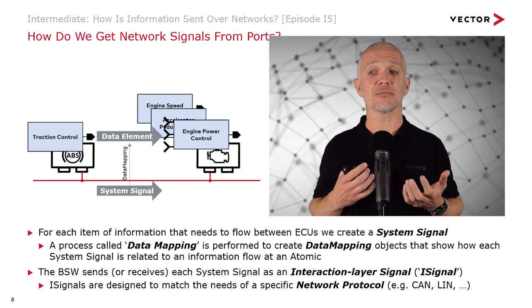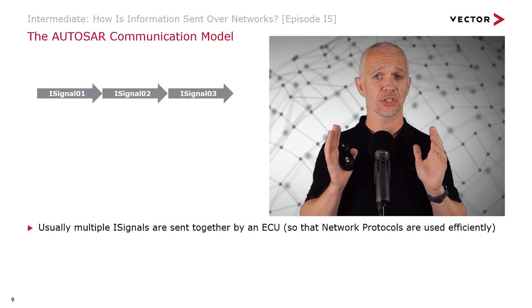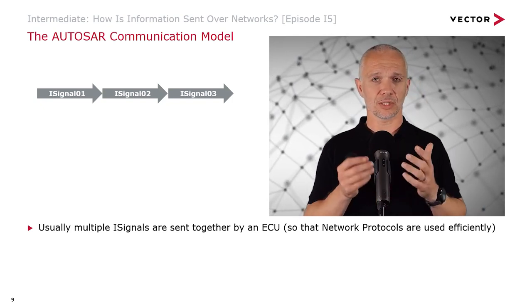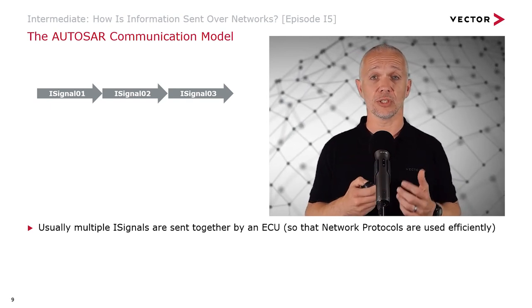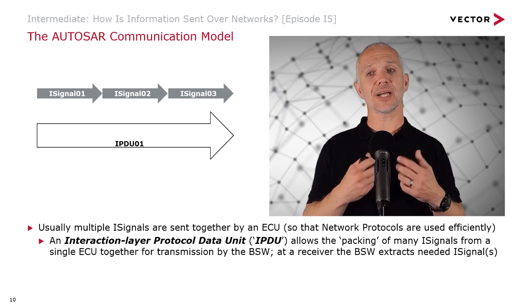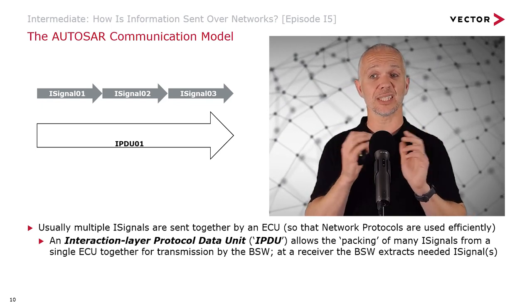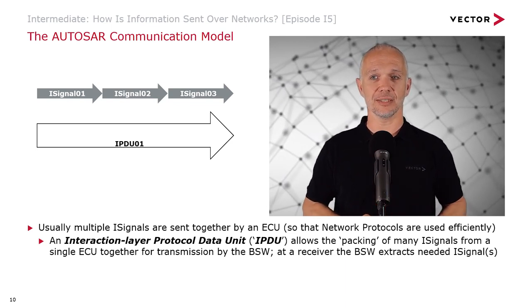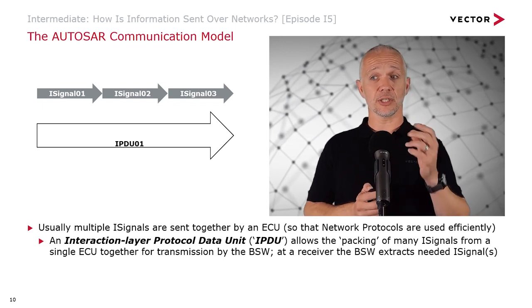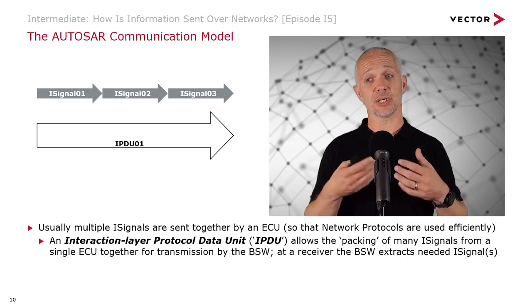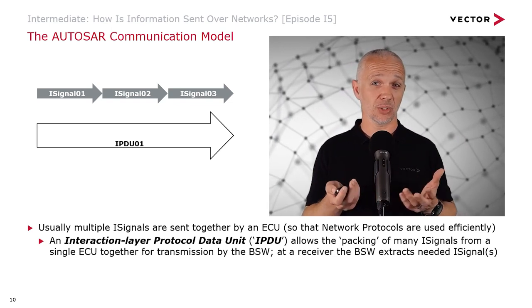iSignals are designed to match the needs of specific network protocols such as CAN, LIN, FlexRay, Ethernet, and so on. Normally we don't want to send just one iSignal at a time — we want to send multiple iSignals at once from an ECU to make the most efficient use of the network protocol. We have the concept of an Interaction Layer Protocol Data Unit, or IPDU for short. A PDU — Protocol Data Unit — is a set of things we want to send together, passing them down to the next level in the communication stack. The IPDU allows us to pack many iSignals from a single ECU together for transmission by the basic software. At a receiver, the basic software then extracts the needed iSignals for that ECU.